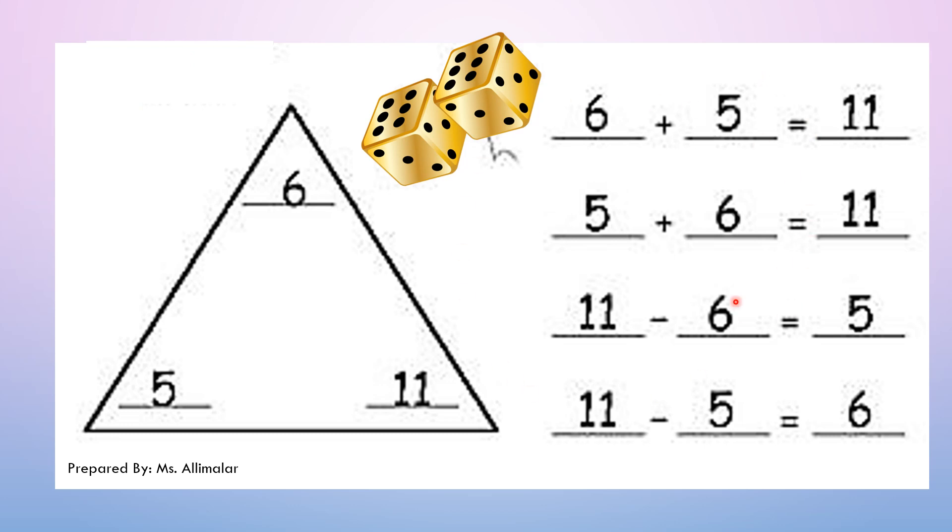Now this is addition and subsection facts. When you have a question on addition and subsection facts, the question will be like this. There will be a triangle with a number at the three corners here. Now what we're going to do is, there will be two addition sentences and two subsection sentences. You have to find out what plus what you get this number as the answer, and what minus what you get this as the answer. Example, please look here.